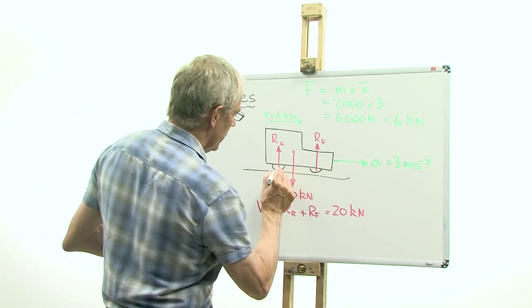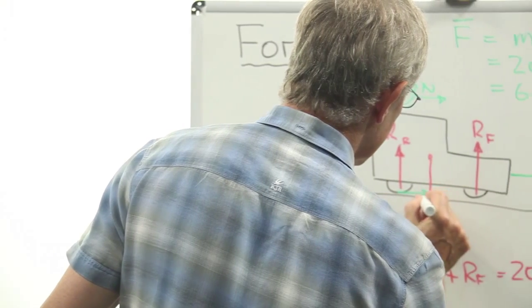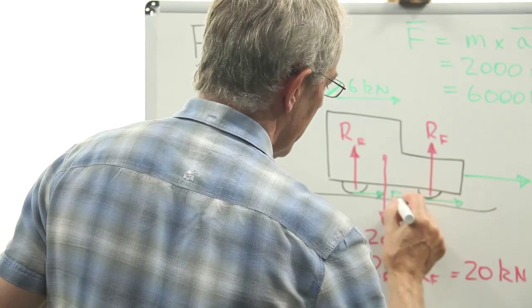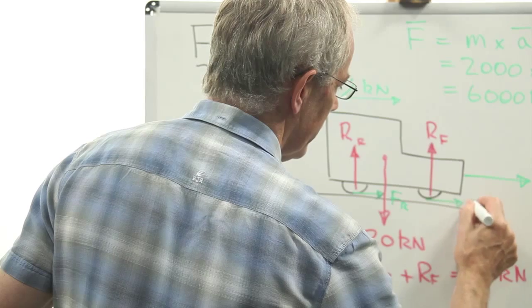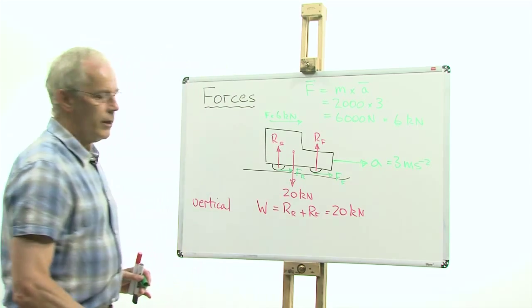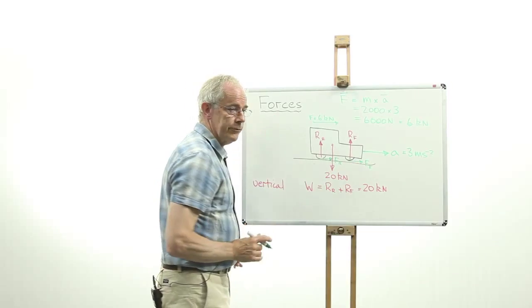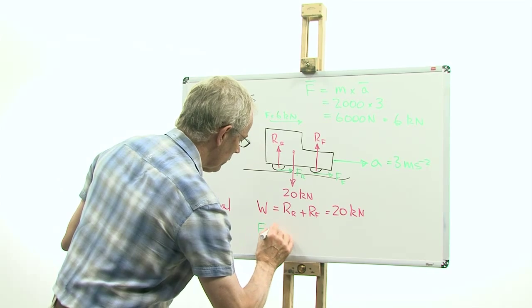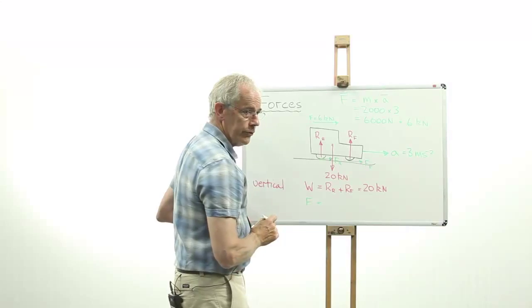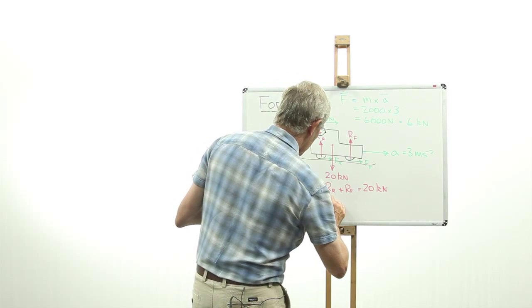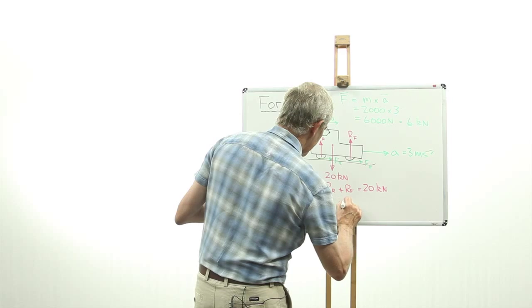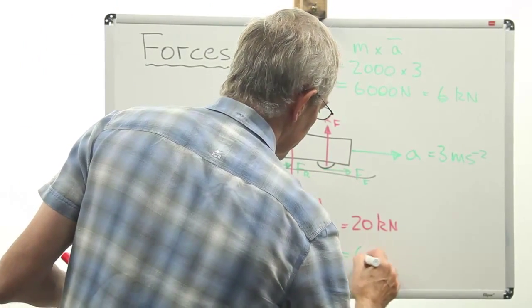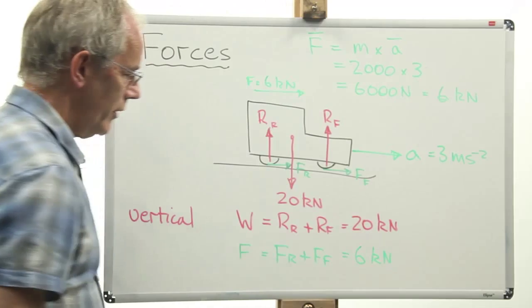So we know that there must be a force left to right at the two sets of tires. Let's call this F rear. Let's call this F front. And we can now write another equation to tell us something about the sizes of these forces. What we found is that the force left to right must be equal to the sum of the forces of the road on the tires. And these are equal to 6 kilonewtons.